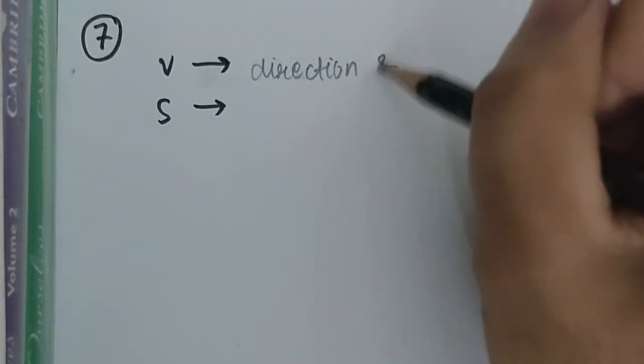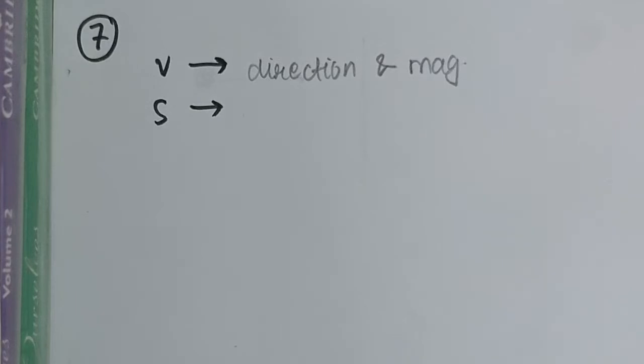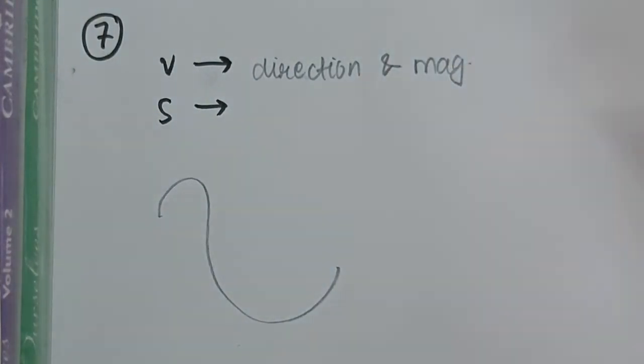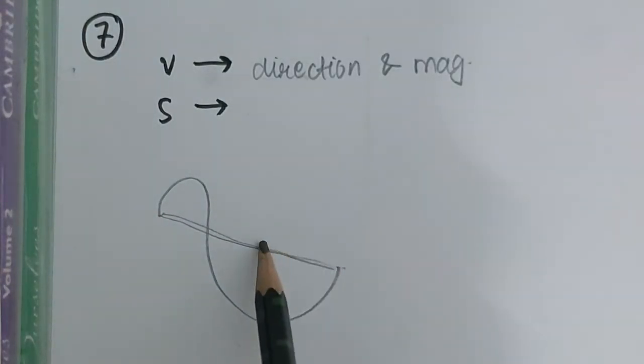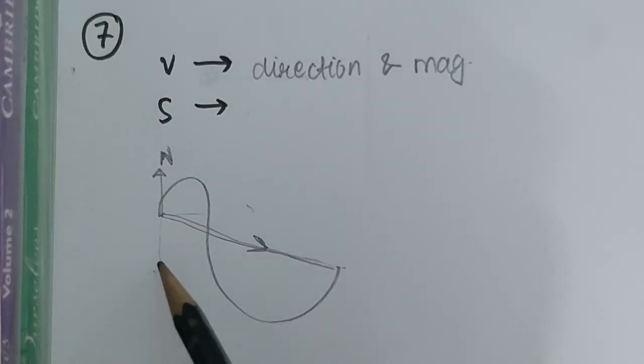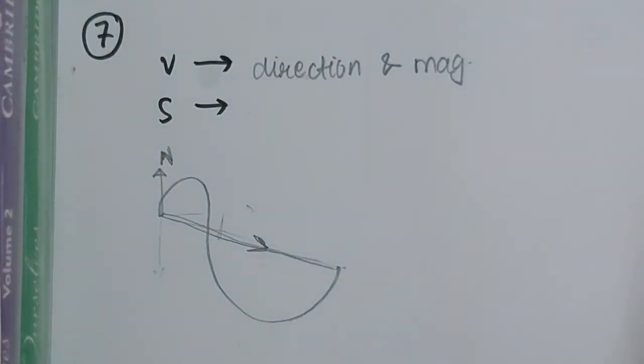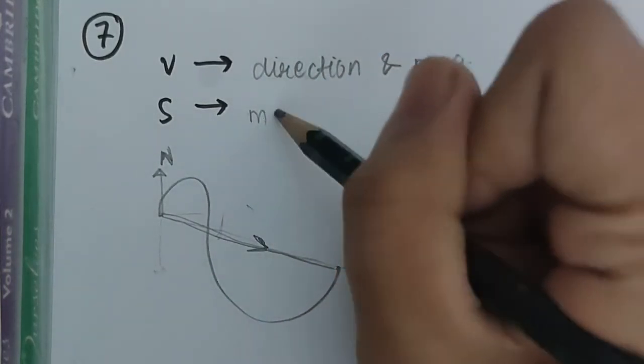Question 7 asks which pair of listed quantities are both vectors. A vector has both direction and magnitude, while a scalar has magnitude only. For example, distance is a scalar — it has no direction. Displacement is a vector — it has a direction, such as degrees south from east.